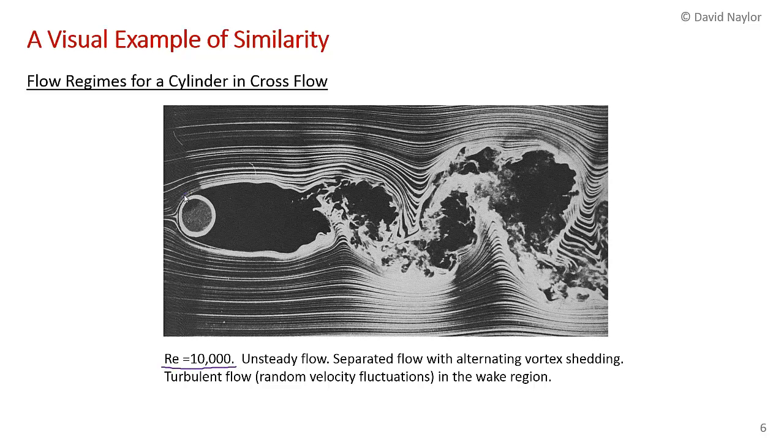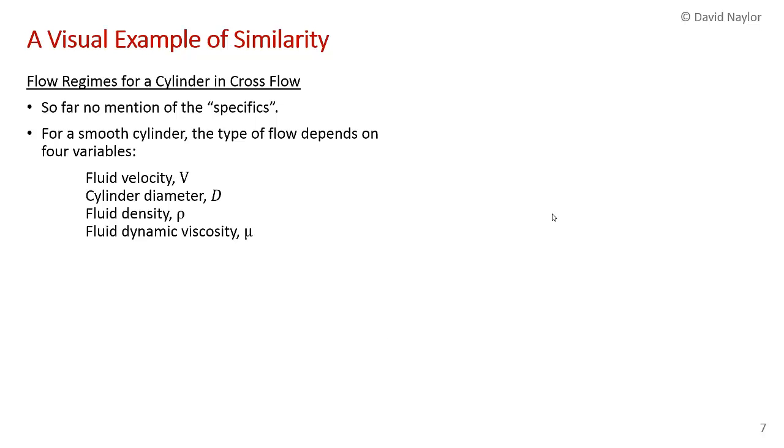At even higher Reynolds numbers—here's 10,000—you get a very similar flow. The separation point moves a little bit forward on the cylinder and you still have vortex shedding, but the vortex shedding here becomes turbulent.